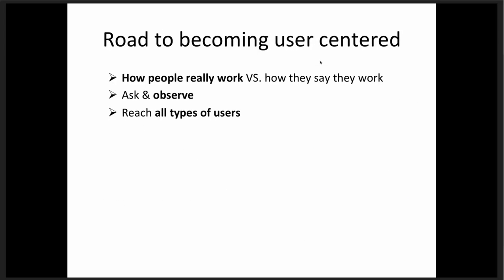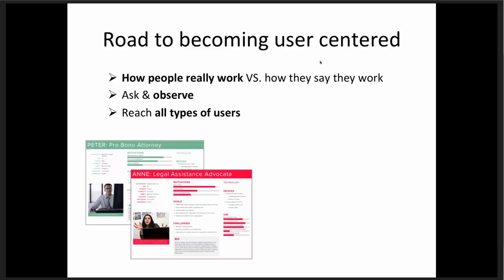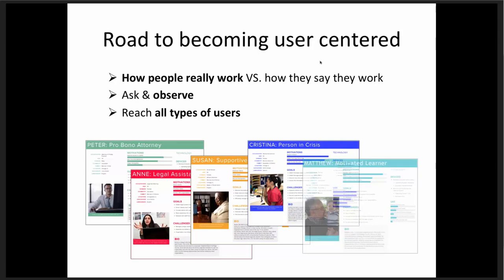How we started becoming user-focused: we wanted to study how people really work and really do things versus how they say they work or do things. We wanted to not only ask but observe — really see how people were interacting with different pieces of our website. We also wanted to make sure we were reaching all of our different users. To get started, we created user personas based on Google Analytics, surveys, and a large focus group brainstorm of people who knew our different audiences. We came up with our five main personas.